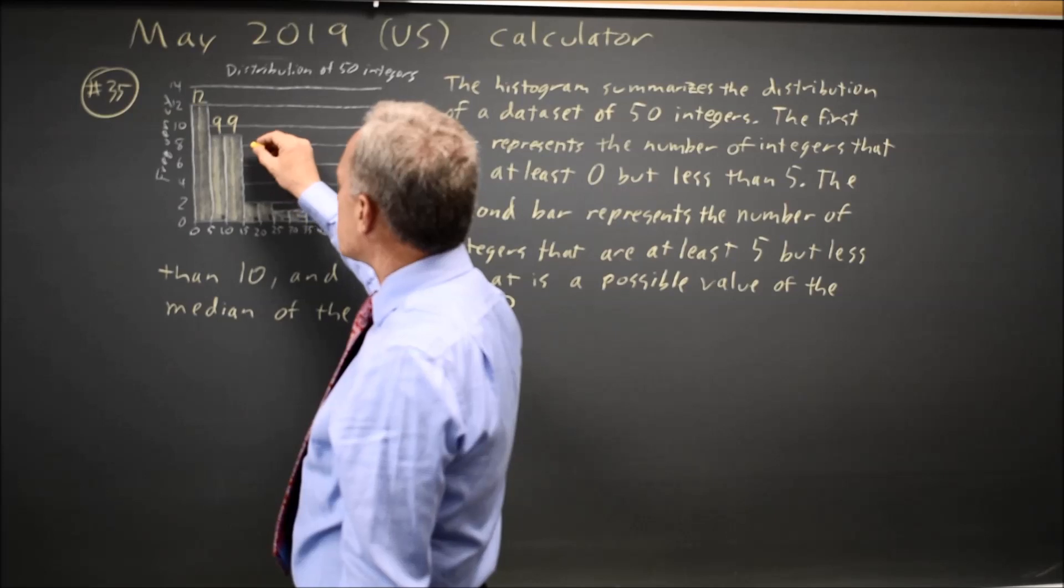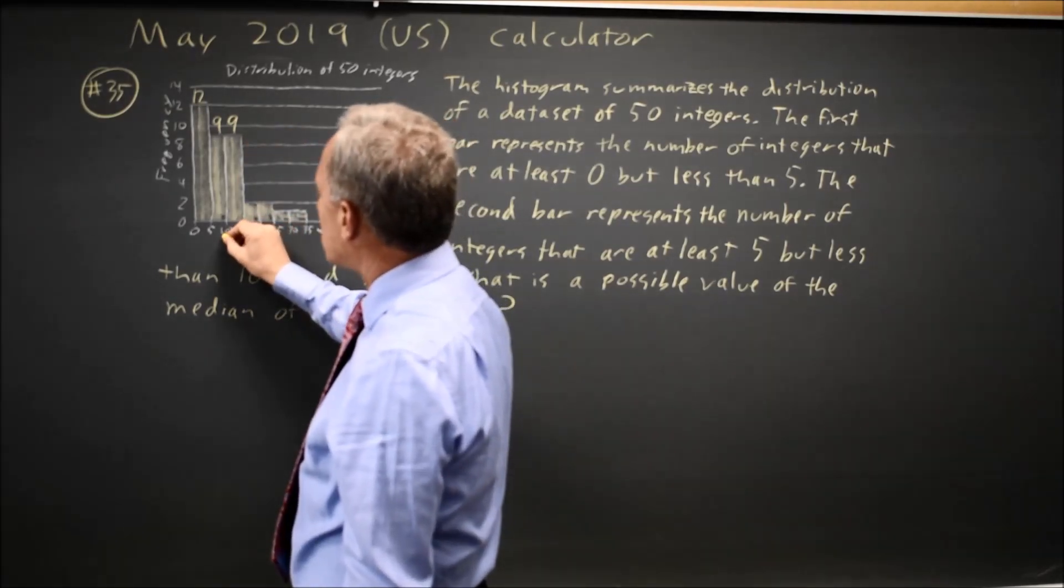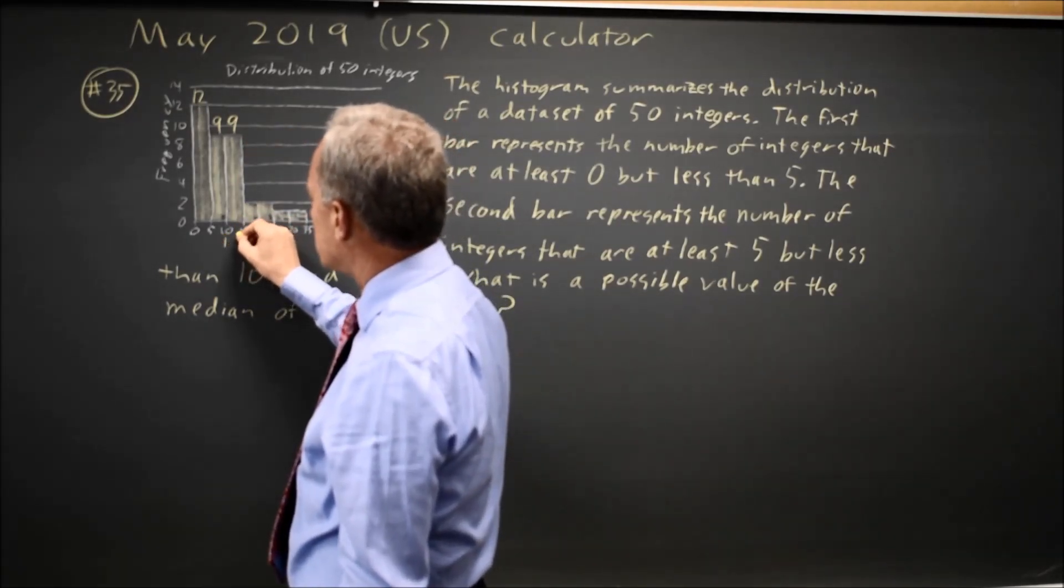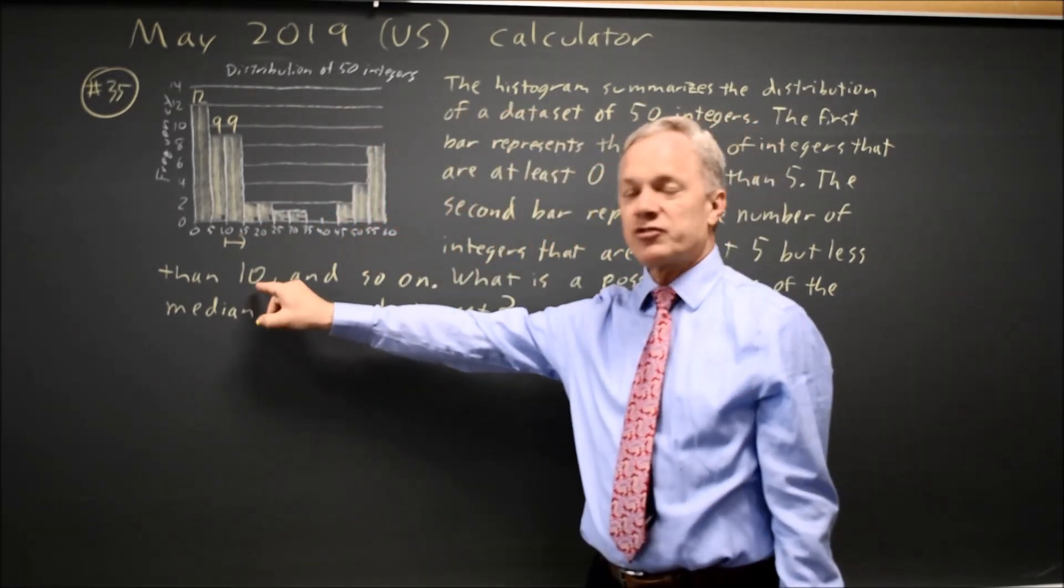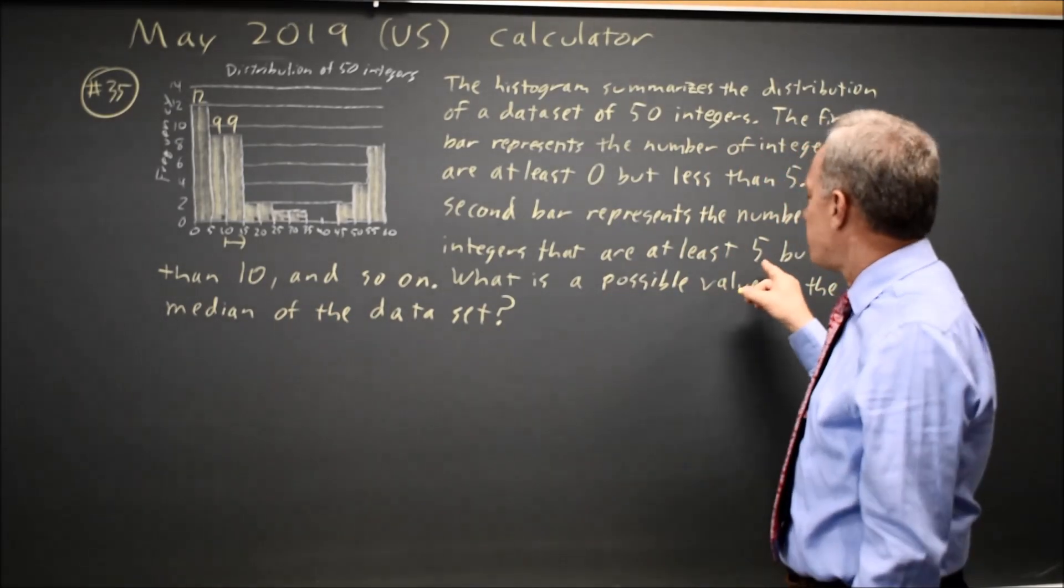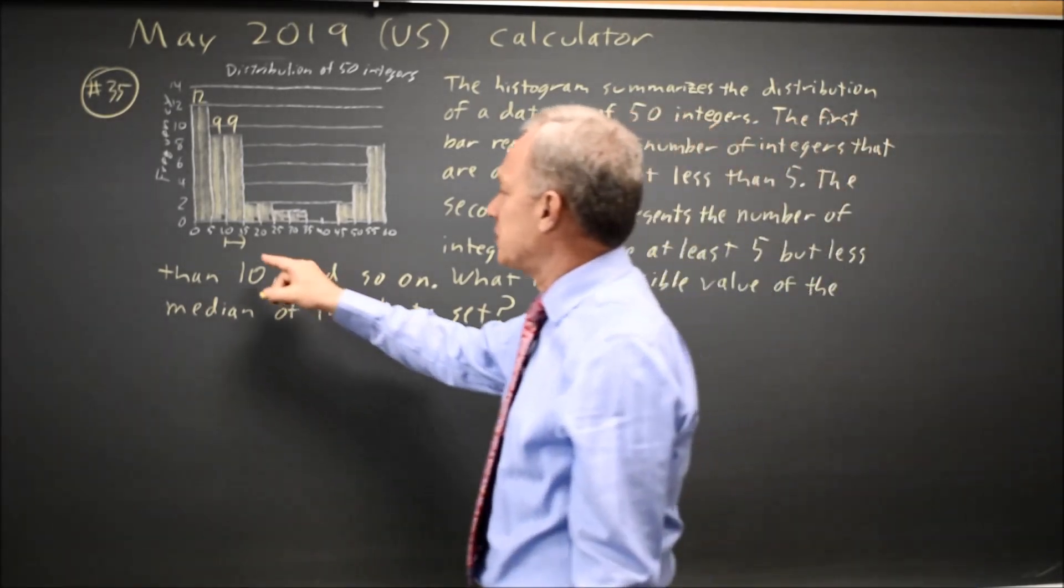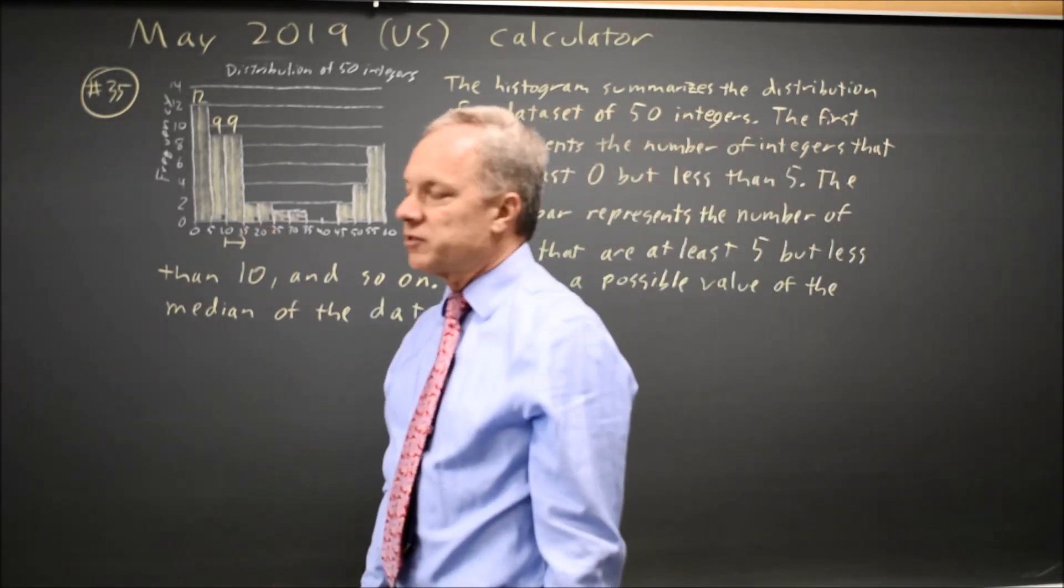So the 25th and 26th values are in this interval from 10 to less than 15, because it's the value at the bottom of the bar to less than the value at the top of the interval.